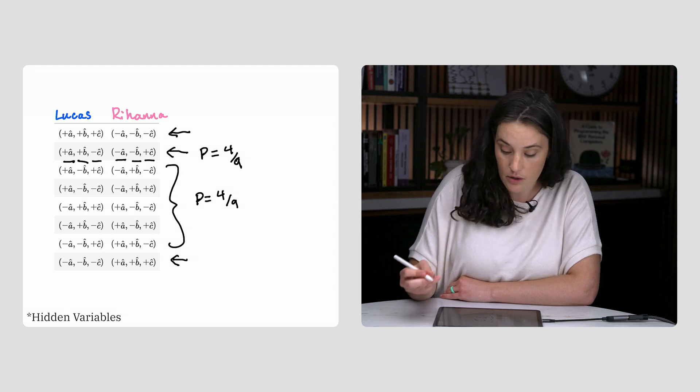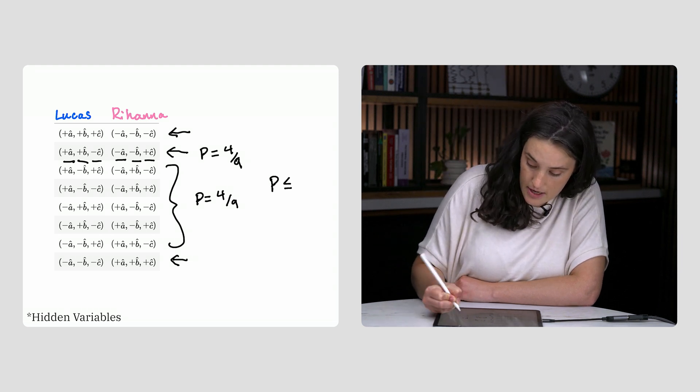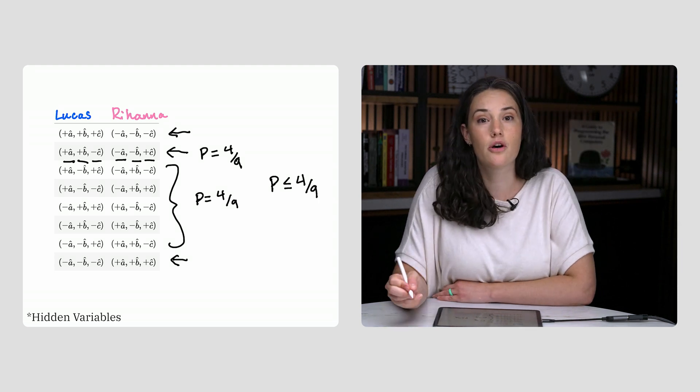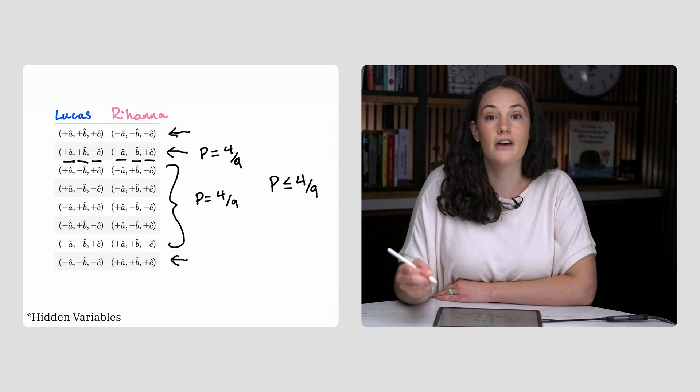This is the Bell inequality. P less than or equal to 4 ninths. And as we'll show, entangled particles violate this.